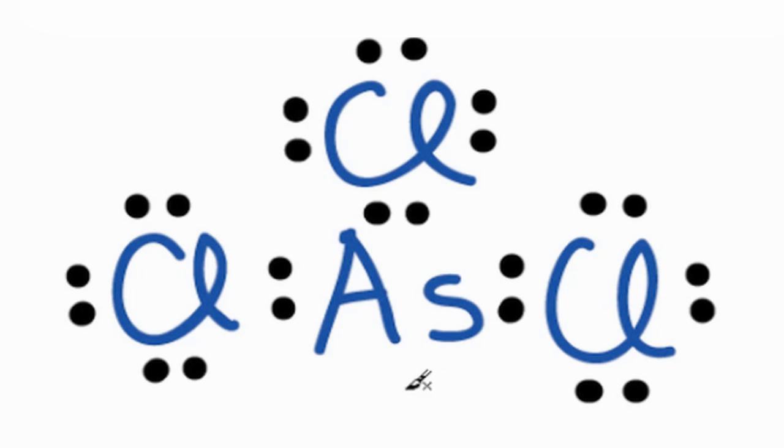Then we'll come back to the central atom, and we'll put 2 valence electrons there. At 26, we've used all 26 valence electrons.